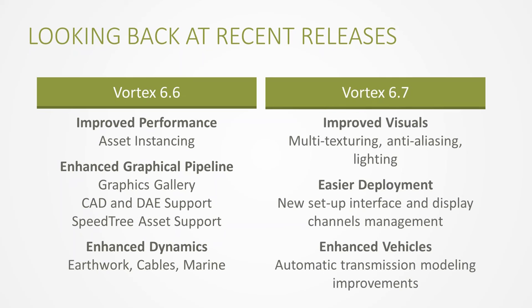Last summer we launched Vortex 6.7, which continued improving visuals by adding multi-texturing control directly in the Vortex Editor, allowing fine-tuning of models for a lifelike look. We also added two new normal mapping methods that were efficient on performance while improving line visualization, and a lighting engine revamp for more realistic scene lighting. Vortex 6.7 also introduced a new setup interface replacing a code-based workflow with a graphical user interface for creating simulator configuration files, and added automatic transmission modeling for vehicles.